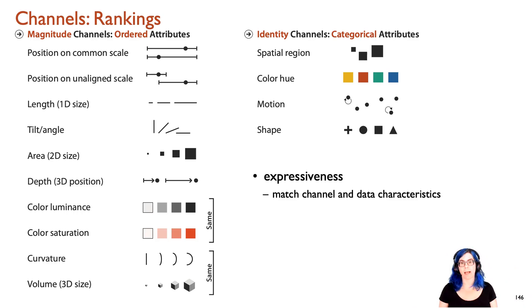On the right, we've got the identity channels, and these are really well suited for categorical attributes. They do not intrinsically convey magnitude. They convey identity. What is that? Is it this or that? What region is it? What color is it? What shape is it? What kind of motion? This is a fundamental divide, and you really want to avoid mismatches. You want to match the characteristics of the channel to the data. If you use an ordered channel to show unordered categorical data, you're going to imply something that's not true. And the converse is if you have ordered data and you use an unordered identity channel to show it, you've just lost information. You've dropped something on the floor.